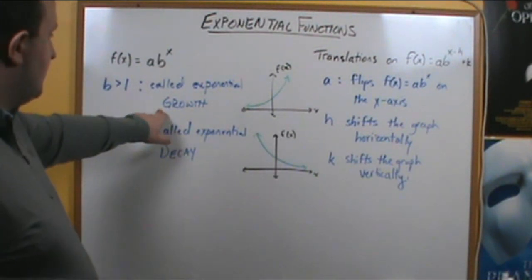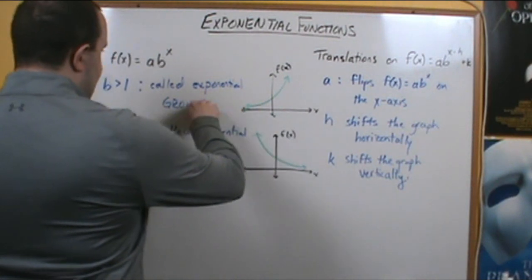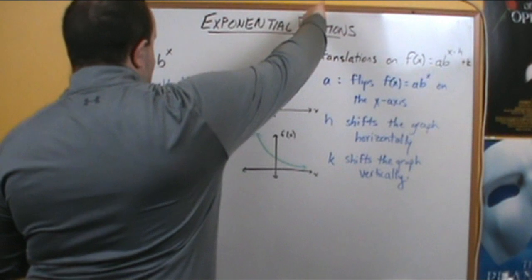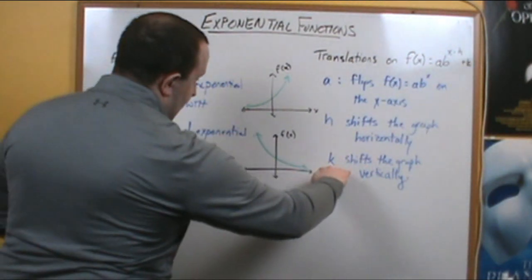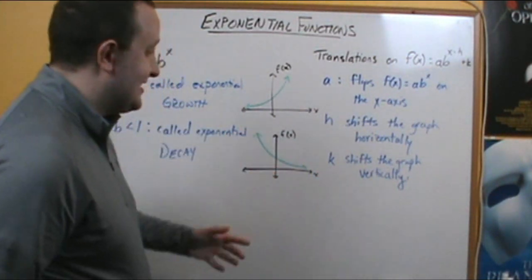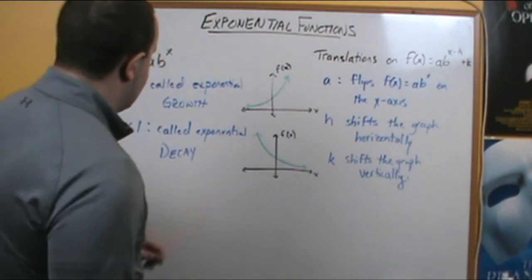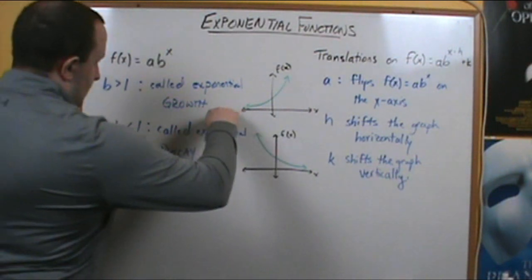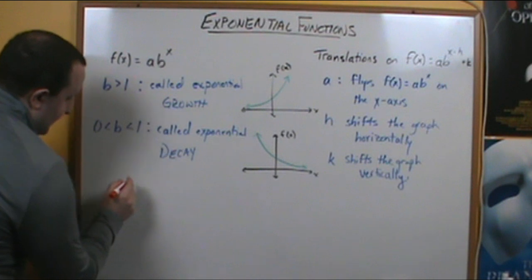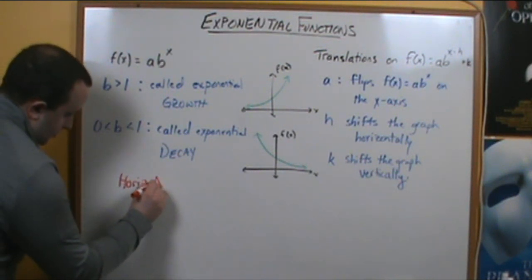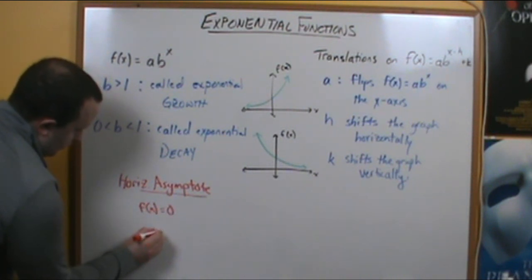If we have an exponential growth function, the graph is going to start almost hugging the x-axis and then exponentially grow. If it's exponential decay, it's going to start really high and come really low, hugging the x-axis. Because the graph hugs the x-axis, there is a horizontal asymptote in both cases — at the line y equals 0.